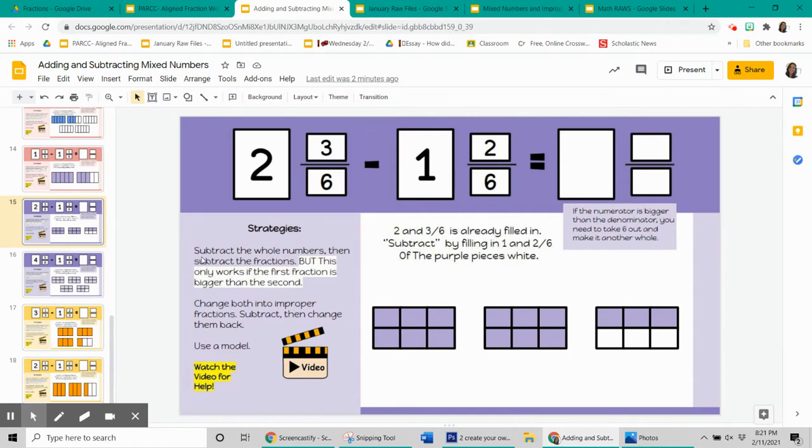So strategy one says you can subtract the whole numbers, so 2 minus 1, then subtract the fraction, so 3 sixths minus 2 sixths, but this only works if the first fraction is bigger than the second. So is 3 bigger than 2? Yes, it is, so you can do it this way.